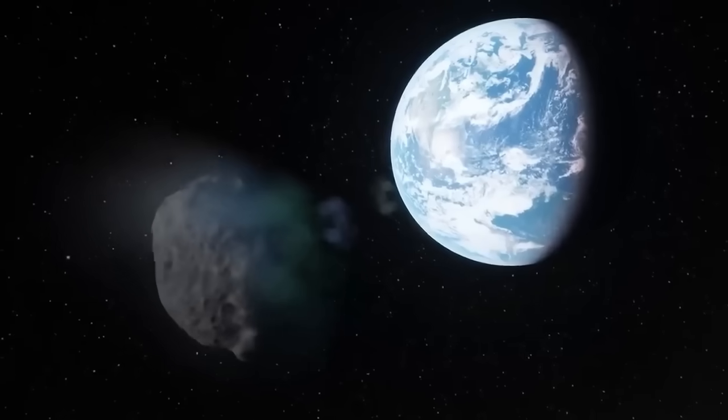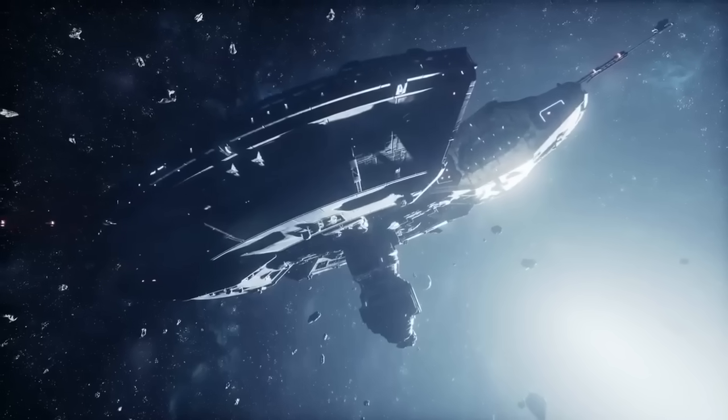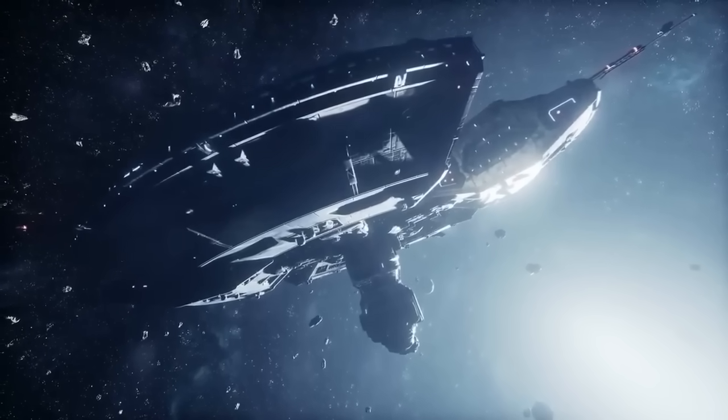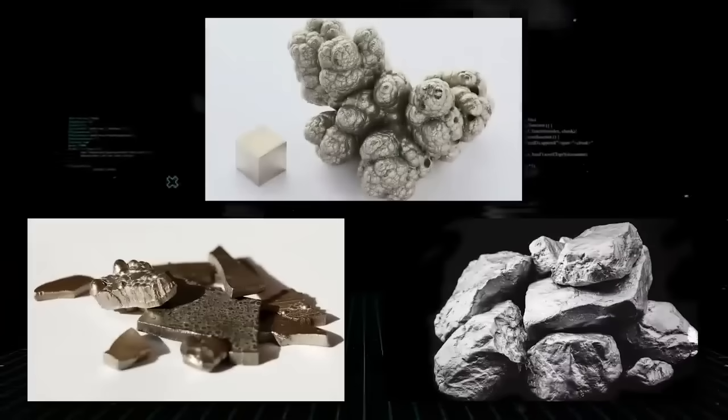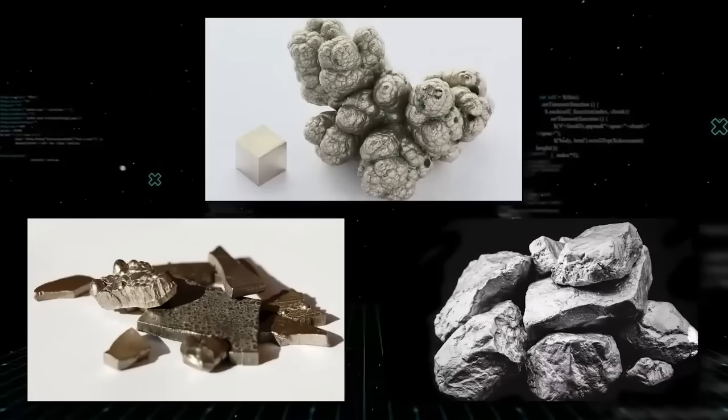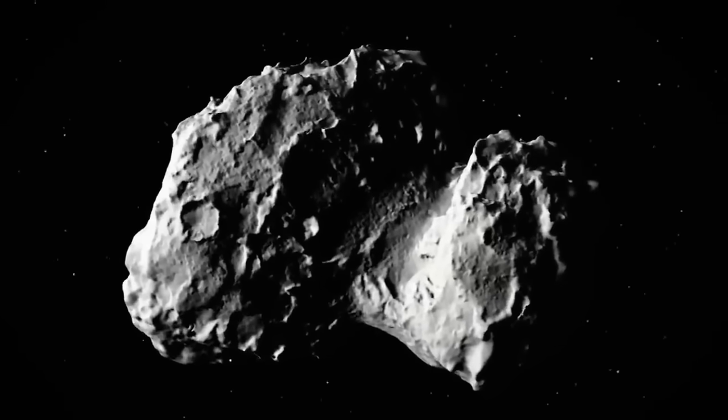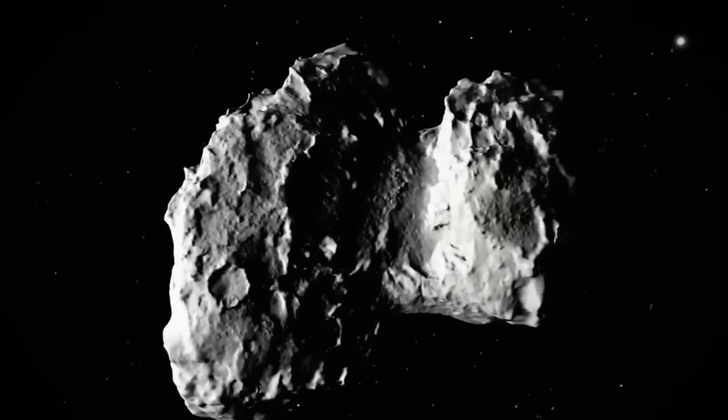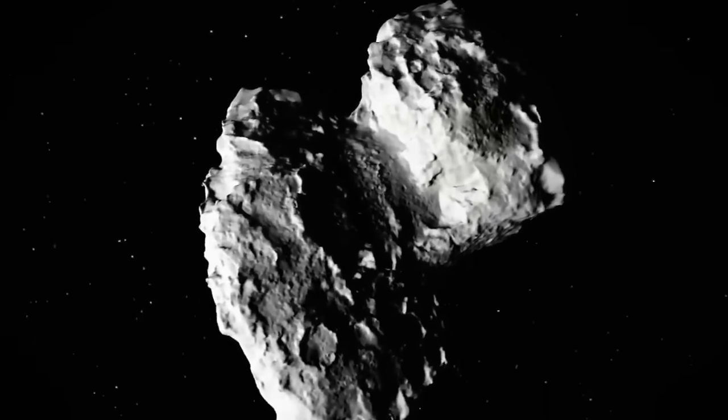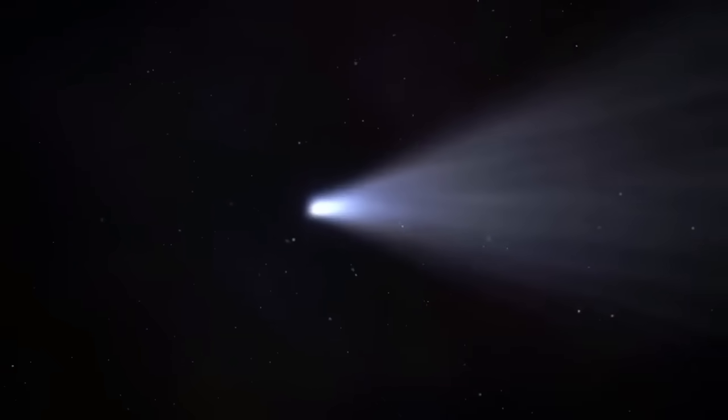If these objects are truly as large as implied by their energy output, a stealth coating or design would be a technological marvel. The strange composition, nickel, cobalt, and unknown alloys, also throws a wrench into conventional theories. Natural comets are typically made of ice, dust, and rock. The presence of such a high concentration of specific metals hints at an engineered origin. To put it mildly, this isn't just a lumpy chunk of cosmic ice.